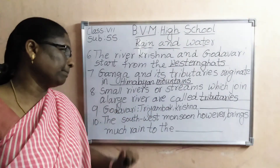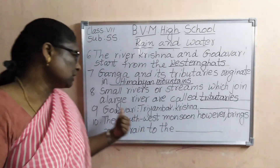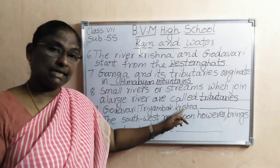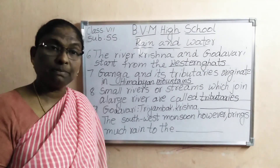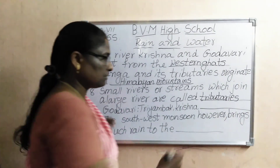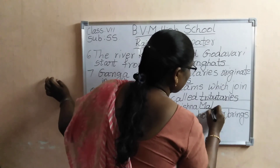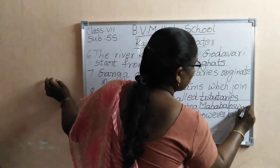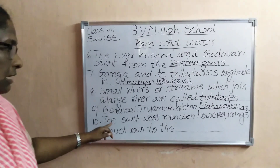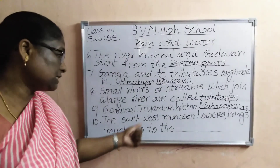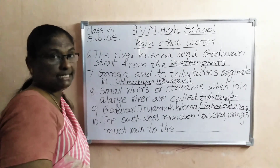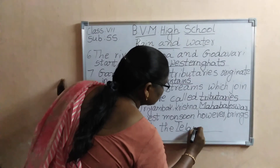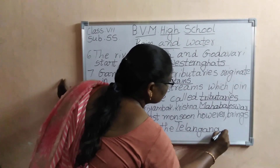Ninth one: Godavari — Trimbak, Krishna — dash. Godavari originates in Nasik at Trimbak. And Krishna also — Krishna's birthplace is Mahabaleshwar. Tenth one: the southwest monsoon however brings much rain to the dash states. That is Telangana.